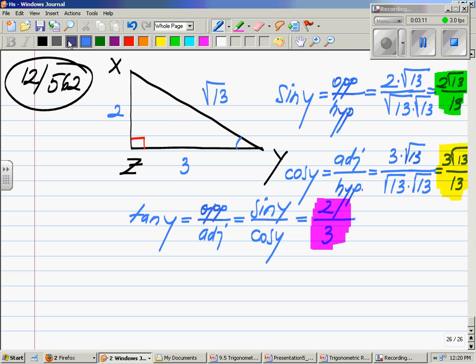The next one, you have to find the cosine and sine of X. Same approach. Sine X equals the opposite of X, which is 3, divided by hypotenuse, which is square root 13. By the same rule, you multiply by square root 13, top and bottom, and you find that sine of X is 3 square root 13 over 13.